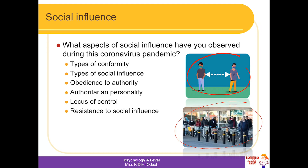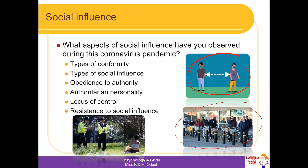Another example might be obedience to authority — people obeying social distancing rules because of legitimate authority, such as a police officer in uniform. But this situation also explains resistance to social influence. Someone sitting down when they're not supposed to raises the question of why some people resist. You might connect this to the presence of social support, an ally, or social learning theory — they've seen others do it and felt vicariously reinforced.